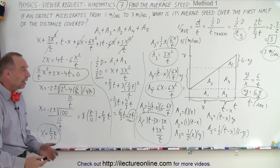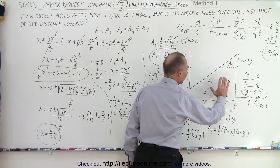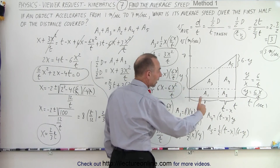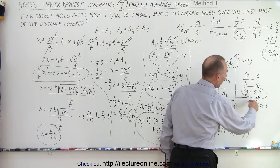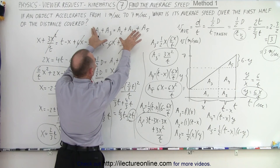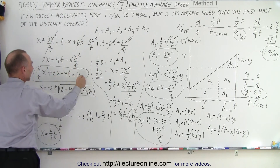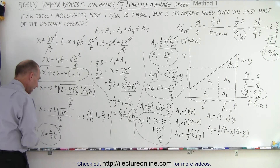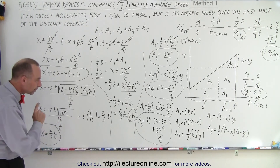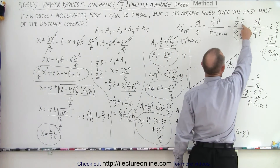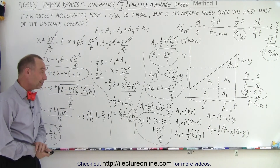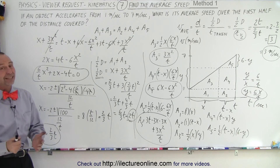So the average velocity of the object going from 1 meter per second to 7 meters per second over only half the distance traveled is 3 meters per second. A bit messy, but it works. This graphical method works by relating the areas under the curve — A1 plus A3 equals A2 plus A4 plus A5 — expressing all areas in terms of x, y, and t, eliminating y via similar triangles, solving the resulting quadratic to find x equals 2/3 t, then dividing distance by time to get the answer.